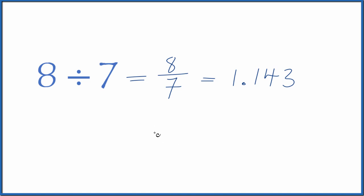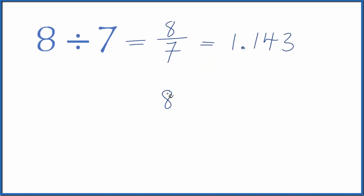You could also do this longhand. You could take 8 and see how many times 7 goes into 8. So it goes in once. 1 times 7, that's 7 with 1 left over.